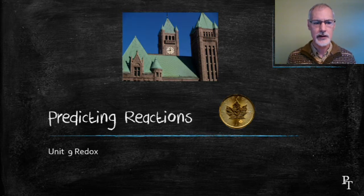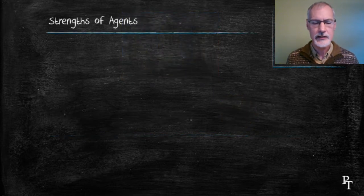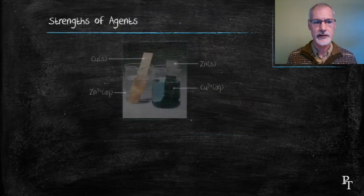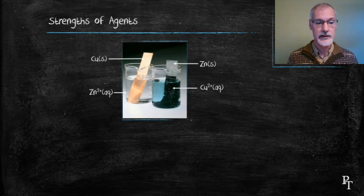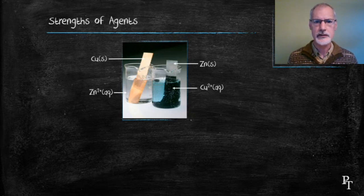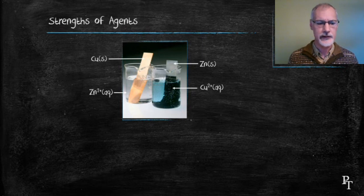Let's start with a simple experiment. Here we have a complementary experiment: a piece of copper sitting in a zinc solution, and a piece of zinc sitting in a copper solution. From the evidence in the picture, the second beaker — the zinc with the copper solution — appears to be undergoing a reaction, and the first one isn't.